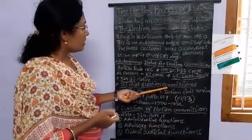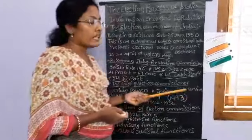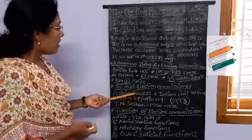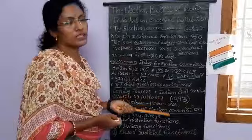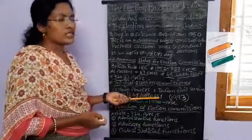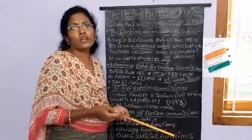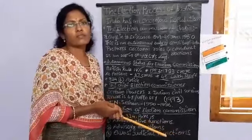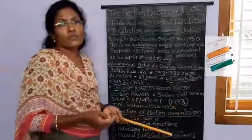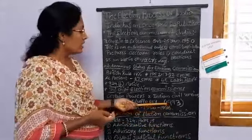The Chief Election Commissioner comes from the Indian Civil Services. He or she serves for six years or up to 65 years of age, whichever is earlier. Earlier, the Election Commission of India had only one Chief Election Commissioner. After 1993, the three-member commission came into existence.